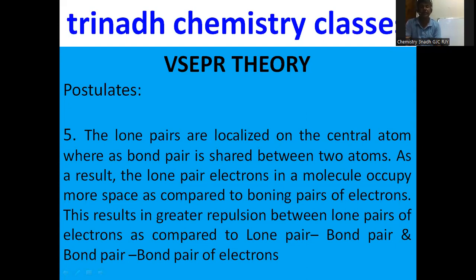There are two types of electron pairs: one is the bond pair and another is the non-bonded pair, also called the lone pair. These lone pairs of electrons are localized — meaning they belong to only one atom — whereas the bond pair belongs to two atoms. That is why lone pairs of electrons occupy more space compared to bond pairs.